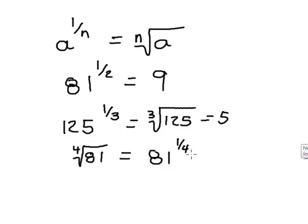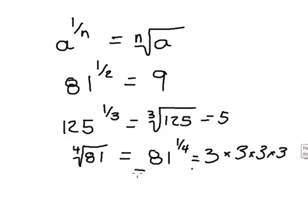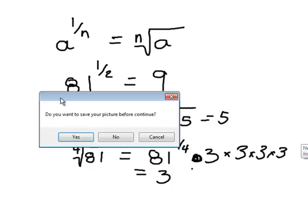So the fourth root is the same as an exponent of 1 over 4. I'm looking for a number that if I multiply it times itself four times I get 81, and the answer is 3 because 3 times 3 is 9, times 3 is 27, times 3 is 81. So those were roots or rational exponents where the numerator was 1.